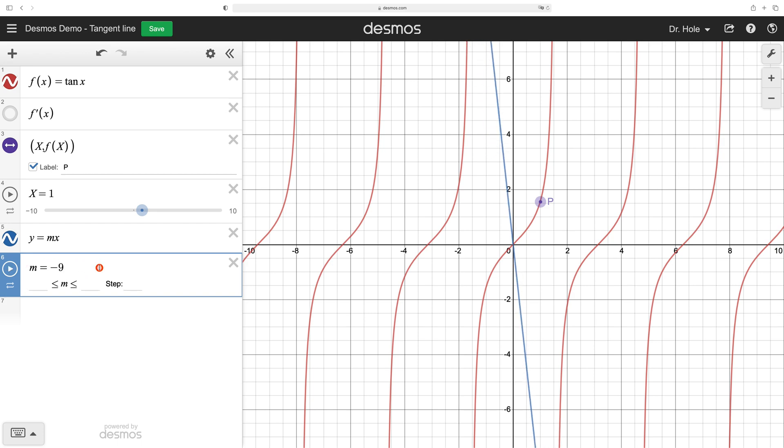We can change the m to the value of f prime at input capital X. And then if we move our point P, we can do that by clicking on the point P and moving it. As I move it more to the right, that the slope of the blue line becomes larger. If I move the point P to the left, the slope comes down.